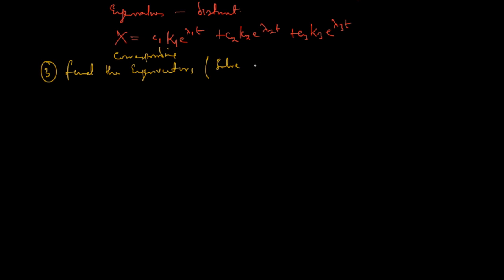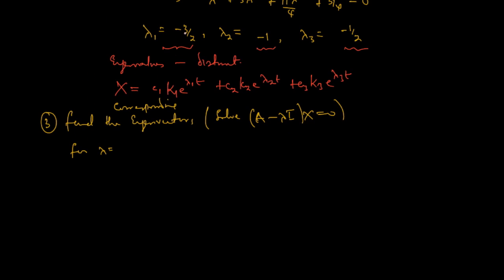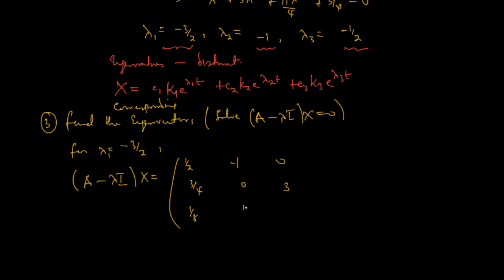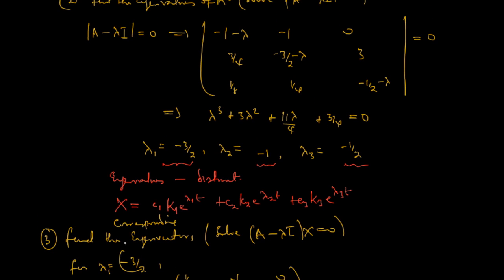To find the corresponding eigenvectors, we solve (A − λI)x = 0 for each eigenvalue. For λ₁ = −3/2, the matrix A − λI gives us: one half, negative one, zero; three over four, zero, three; one over eight, one over four, one. We've replaced λ with negative three over two in the diagonal entries, then multiply by the vector [x, y, z]ᵀ = [0, 0, 0]ᵀ.